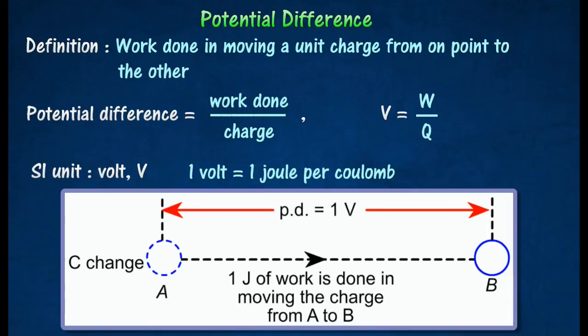The potential difference across two points in the circuit is one volt if one joule of work is done in moving one coulomb of charge from one point to the other.